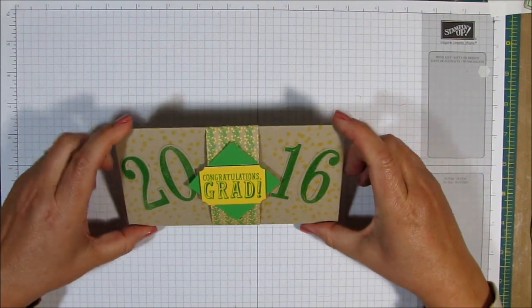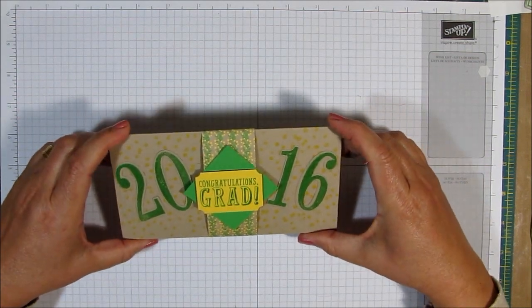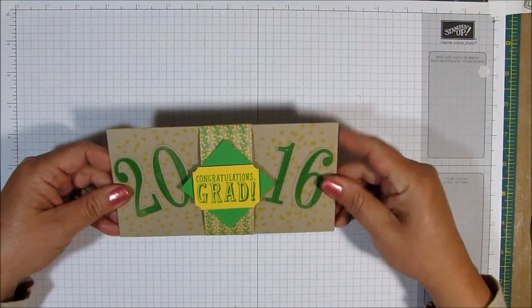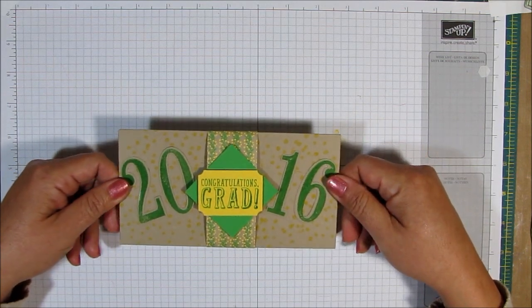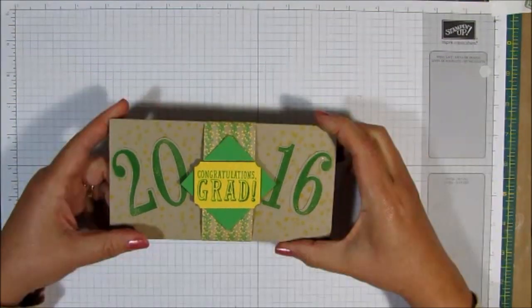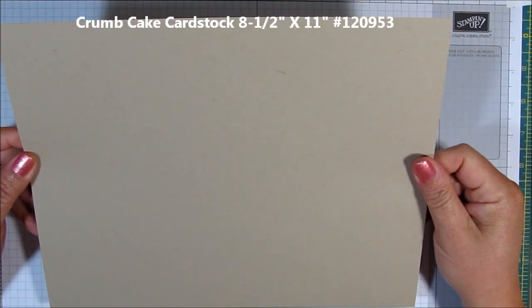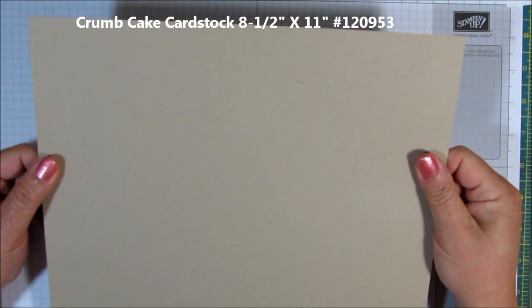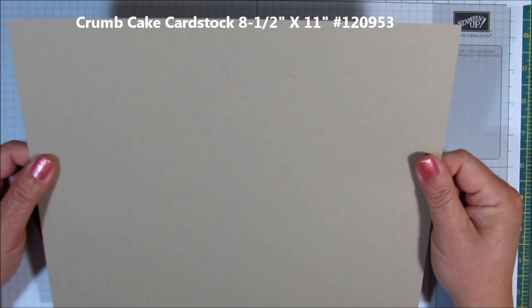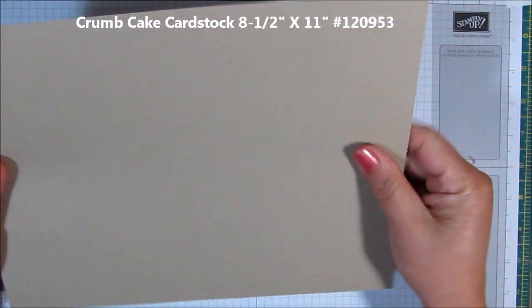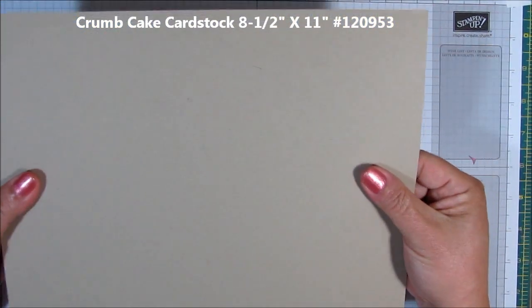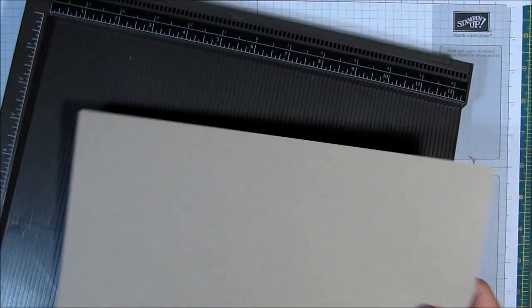So I'm going to show you how I put this together using the gift bag punch board. So let's get started. I will be right back. What we're going to need is a piece of card stock that measures 8 1⁄2 by 11, and I have crumb cake here and you're going to use this whole sheet. I'll show you how I use the whole sheet.